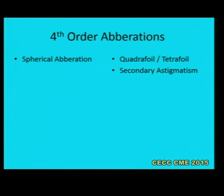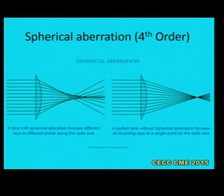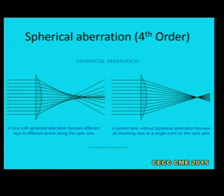Fourth order aberrations include spherical aberration, quadrifoil, and secondary astigmatism. A normal spherical lens has a different angle of refraction in the periphery compared to the center, causing more refraction for peripheral rays than central rays. Central rays come to a focal point farther back while peripheral rays focus closer, creating a large depth of focus. In an aspheric lens, surface power decreases from center to periphery, so all rays converge to a single focal point.